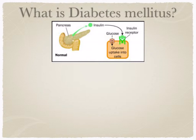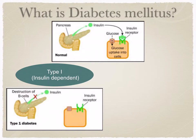There are two forms of diabetes mellitus. Type 1, also referred to as insulin-dependent diabetes mellitus, is due to the body being unable to produce insulin. It normally begins in childhood and is therefore also called juvenile onset diabetes. It may be a result of an autoimmune response whereby the body's immune system attacks its own cells — specifically the beta cells of the islets of Langerhans.